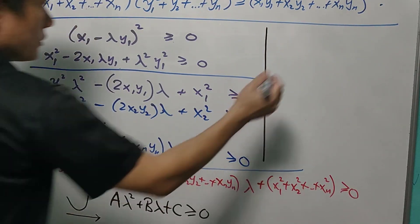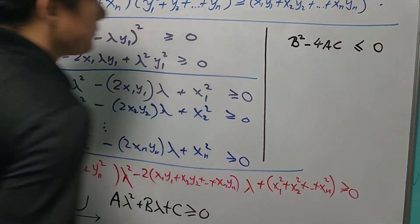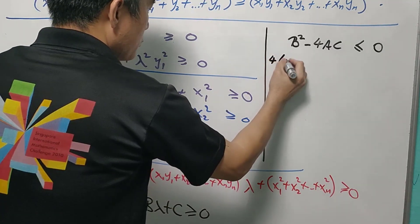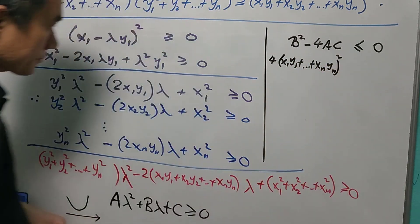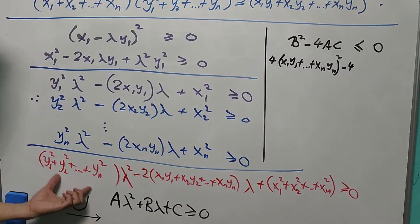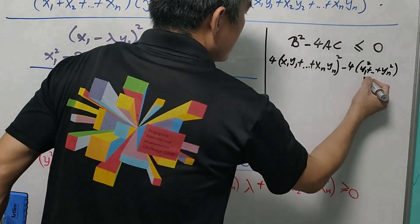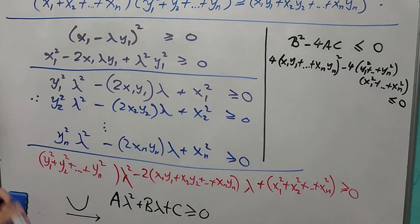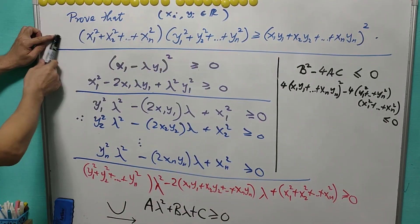Since the discriminant is ≤ 0, we know that b² − 4ac ≤ 0. Here b equals the sum of 2xiyi, so b² gives 4(x1y1 + … + xnyn)². And −4ac gives −4·(y1² + … + yn²)·(x1² + … + xn²). This whole expression is ≤ 0. Cancelling the factor of 4 and rearranging gives us the Cauchy-Schwarz inequality.